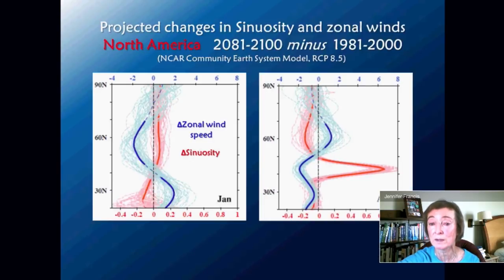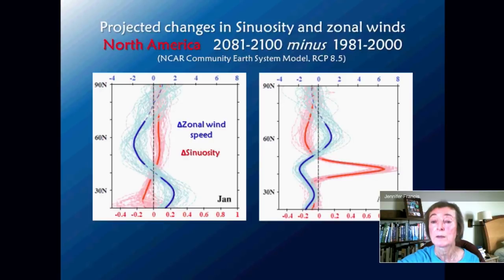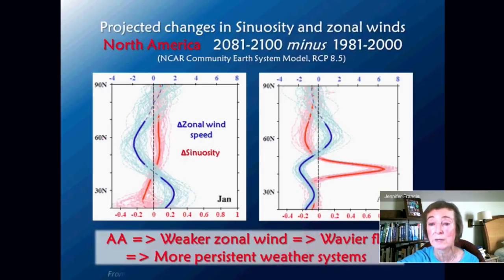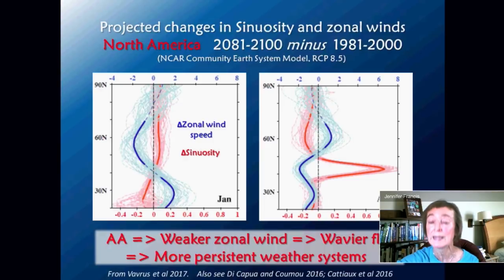Similarly for the summertime — this is for the month of August — we see a really strong peak in sinuosity right around 40 degrees north, right over the United States, combined with again that weakening of the zonal winds. This is an indication that the loss of snow cover during the spring — a very strong signal of climate change — is leading to this pattern in the atmosphere: Arctic amplification over the continents weakening the winds and driving a big increase in sinuosity, making those waves in the jet stream even bigger. When those waves get bigger they tend to move much more slowly, leading to very slow changes in weather patterns — those persistent weather patterns mentioned at the beginning.